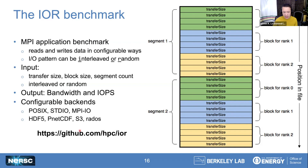One really nice thing about IOR is that in addition to standard POSIX file IO, it has a pretty rich plugin interface in the backend. You can test file system performance using standard POSIX, but you can also test performance through various IO middlewares like MPIO, parallel NetCDF, parallel HDF5, and even some newer emerging standards cropping up in HPC.